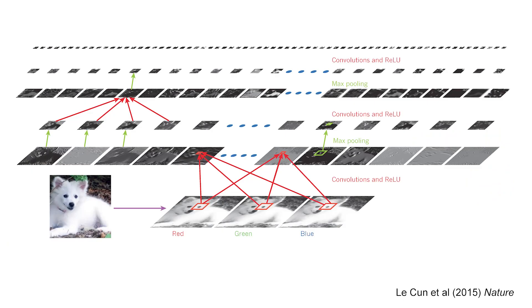To understand more about how expectations shape perceptual experiences in general, we've been developing an approach called computational phenomenology, which is basically building computational models of different kinds of perceptual experience. We took one of these off-the-shelf neural networks called AlexNet, which consists of a number of layers and is very good at classifying objects in images. It operates in a feed-forward or bottom-up way. But the clever people at Google realized that if you run it backwards, you can project an expectation into the image itself — instead of updating the classification about what's in the image, you update the image until the network settles into a stable state. Google calls this the deep dream algorithm.